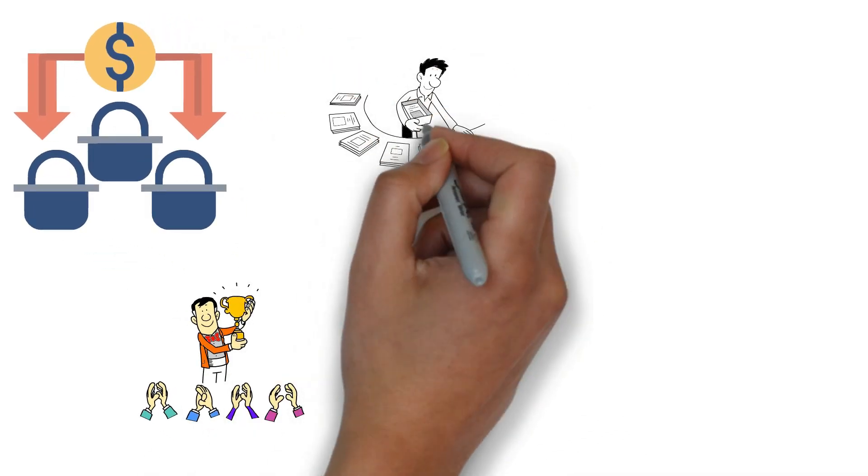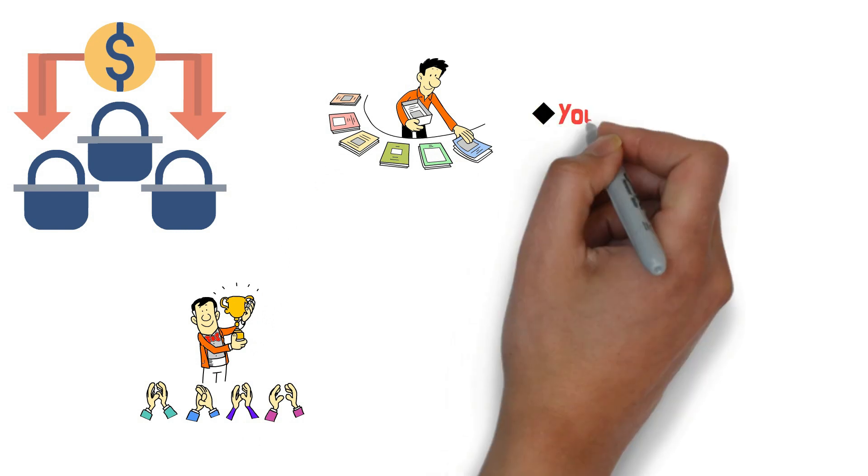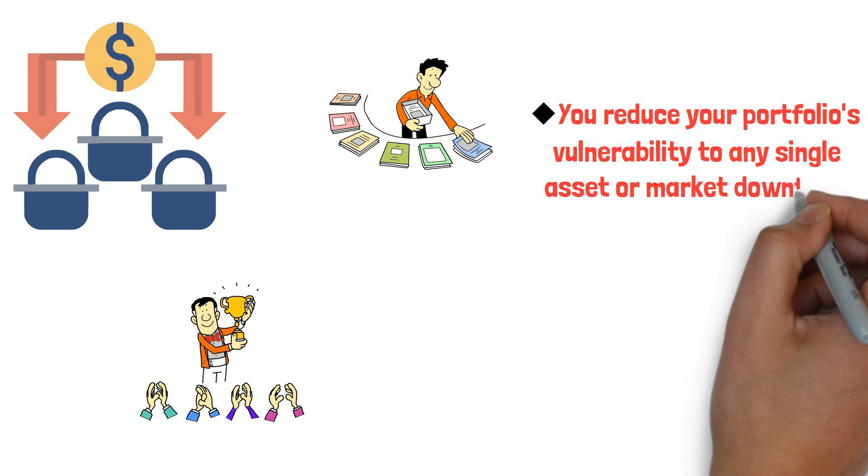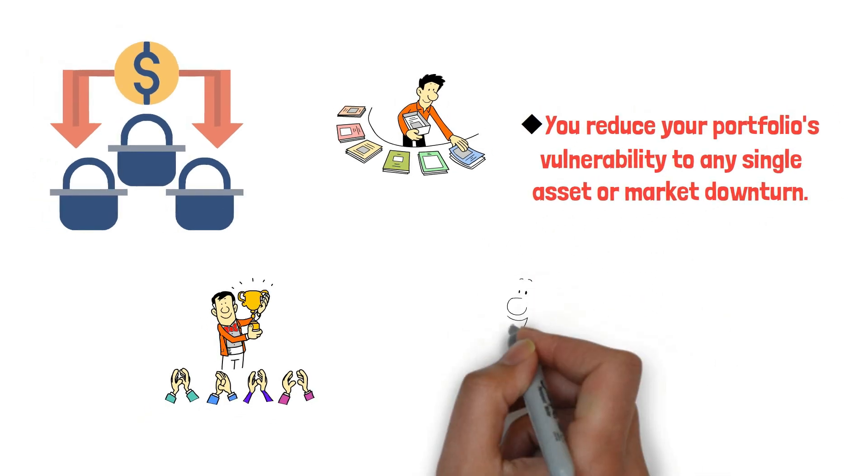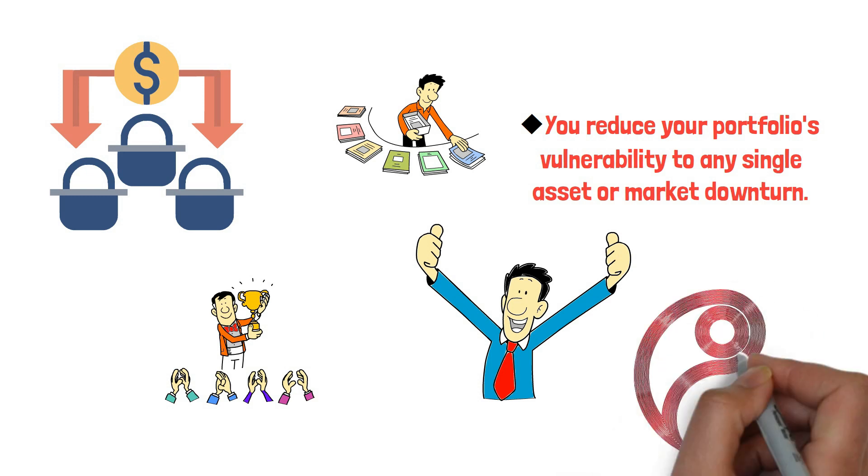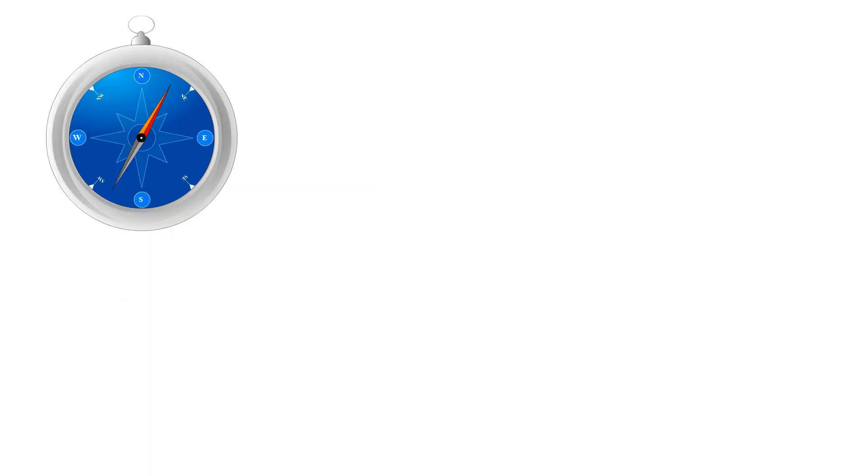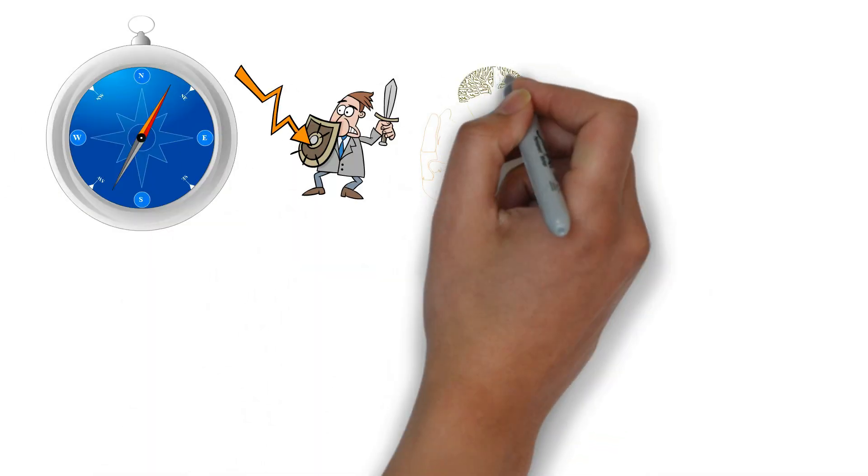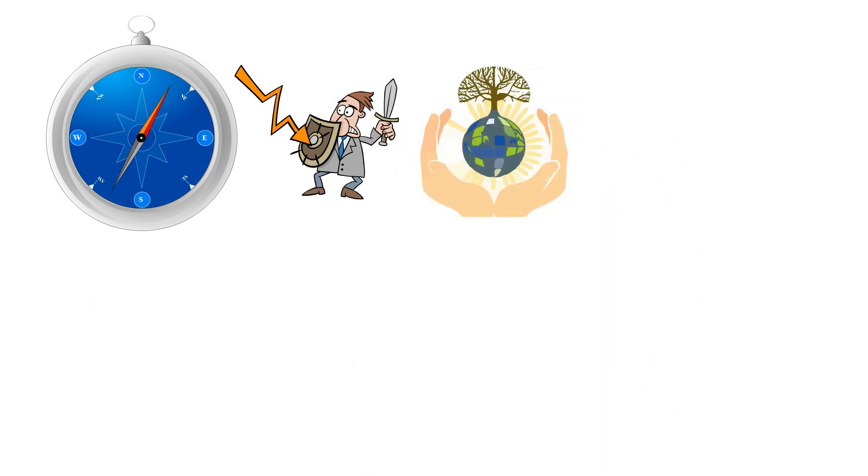By allocating your holdings across different investment opportunities, you reduce your portfolio's vulnerability to any single asset or market downturn. This approach helps minimize the impact of adverse events and creates a cushion to absorb the potential losses. To navigate the unpredictable nature of financial markets and safeguard your financial well-being, it is essential to prioritize diversification.